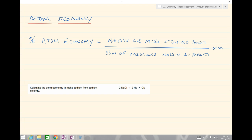How does that work in practice? Well, we've got our example here, where in this case we've got a question to see: calculate the atom economy to make sodium from sodium chloride. So sodium chloride being a common table salt. What's the atom economy?